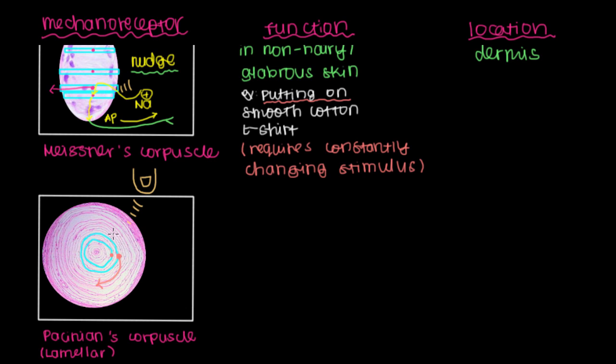And compared to Meissner's corpuscle above, in order for this disk to move in this direction and relative to this inner disk right here, we would require a little more significant of a stimulus. So we'd want something like a push or a poke to cause this disk to move relative to this disk.